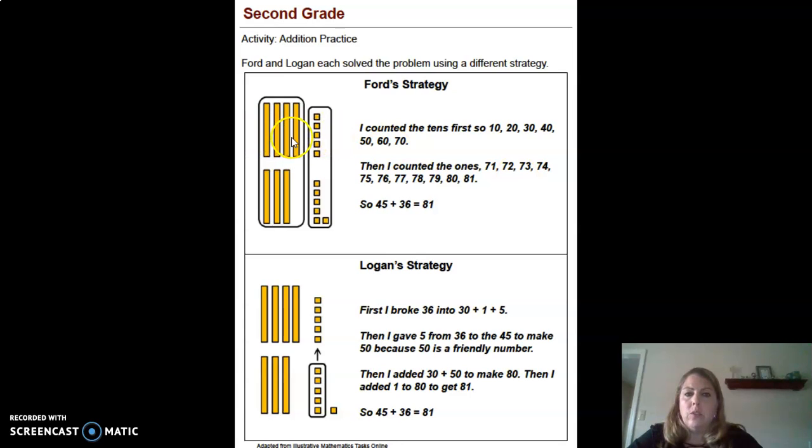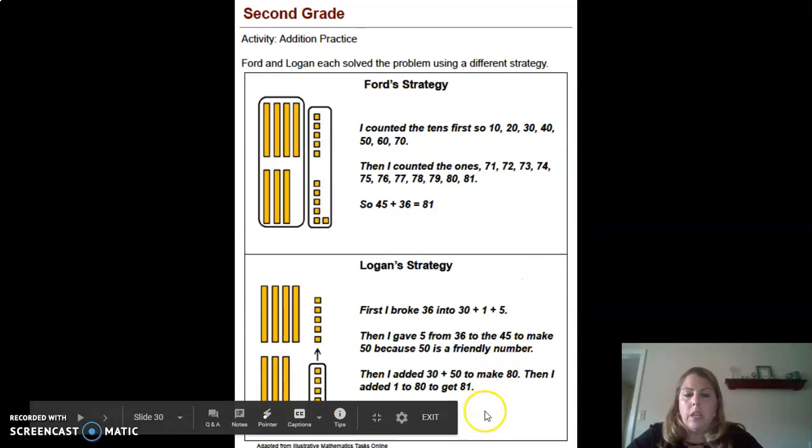Ford counted the tens first and then he counted his ones. Thinking, is that always going to work if you do it that way? And then looking at Logan's, Logan made a friendly number. We know a lot of our 10 numbers, 10, 20, 30, 40, 50, are friendly numbers that make things easier to add together.